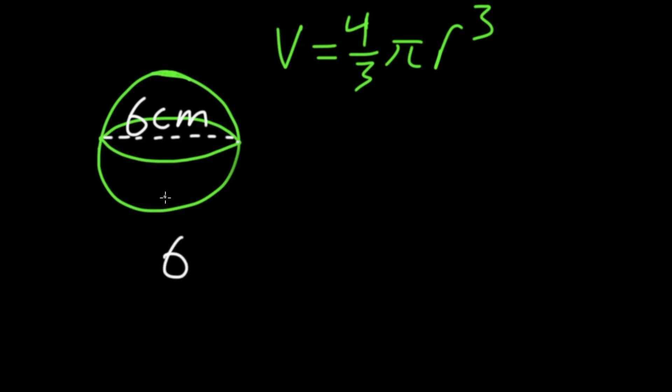Because our diameter is 6 centimeters, our radius is half that. So if we divide that by 2, we get a radius of 3.